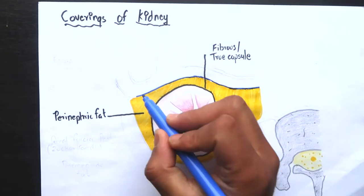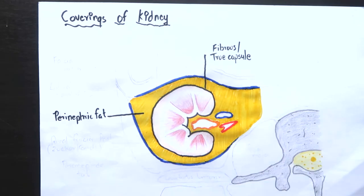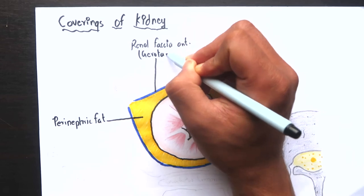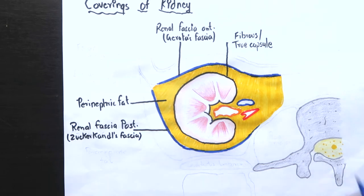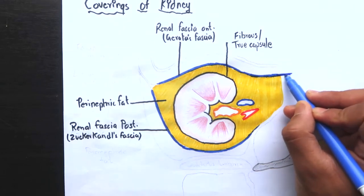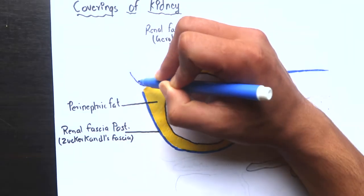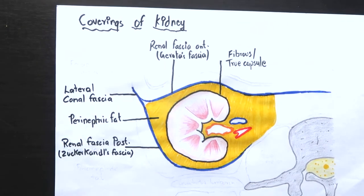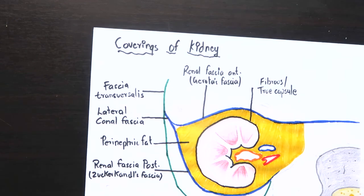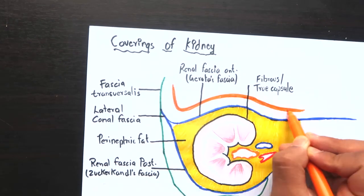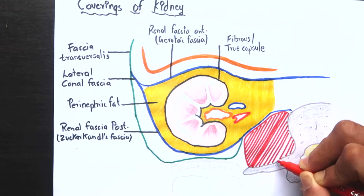The third layer of renal coverings is called renal fascia or false capsule. It has two layers. Anterior layer or fascia of Gerota and the posterior layer or the fascia of Zuckerkandl. The anterior layer of renal fascia on the medial side continues as the anterior layer of the opposite kidney. Whereas laterally, this layer fuses with the posterior layer to form lateral conal fascia that again fuses with the fascia transversalis.